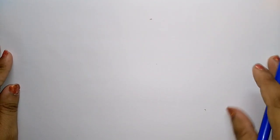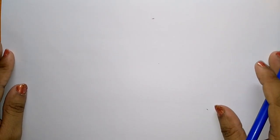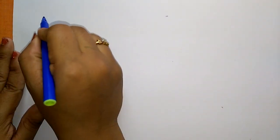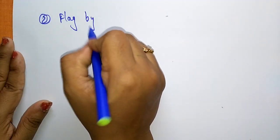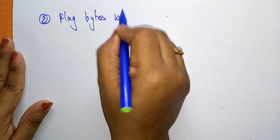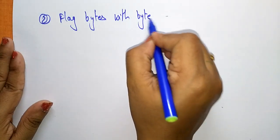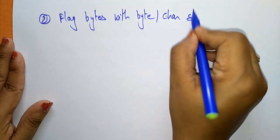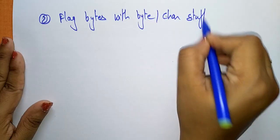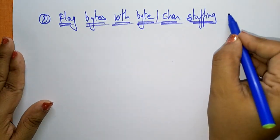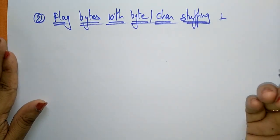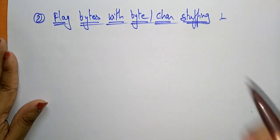Now coming to the next method in framing — you can do framing by using the flag byte with byte or character stuffing. Let us see how it works, so in flag byte with byte or character stuffing it follows some steps.